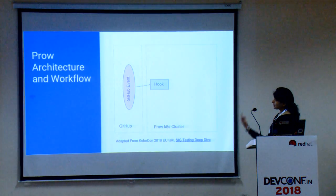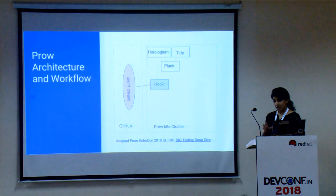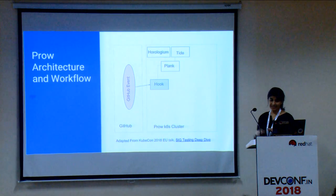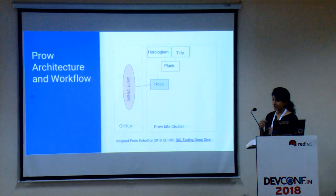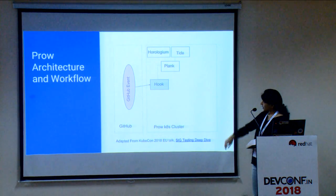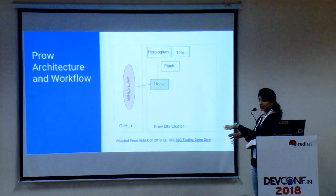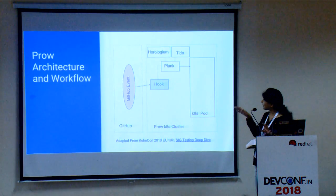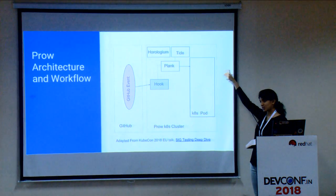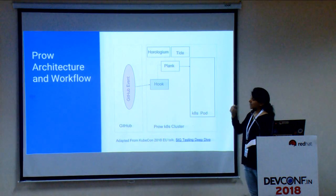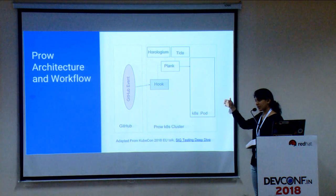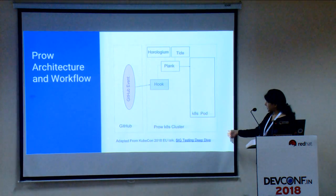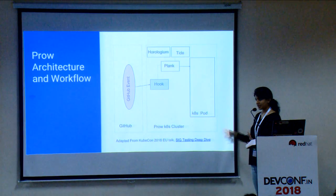Hook is a Kubernetes controller. The Hook server deserializes the payload coming from GitHub and sends it to Plank. Hook creates a Prow job, and all Prow jobs are sent to Plank, which acts as a scheduler that schedules your jobs on the Kubernetes side. Tide and Horologium are the other controllers — Tide handles PR merging, and Horologium handles periodic tasks like cron jobs.